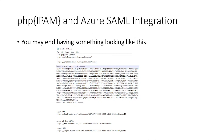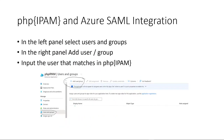Now in our Enterprise App, we want to go to Users and Groups in the left pane and add the user — GSmally1 — in there.